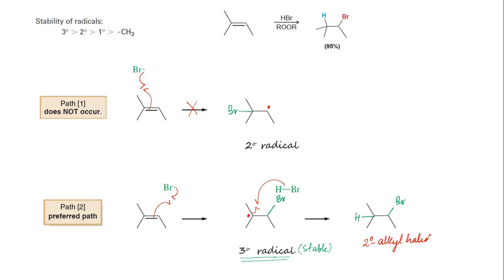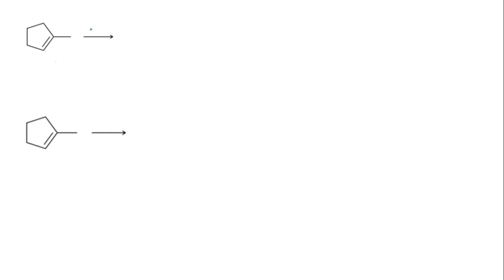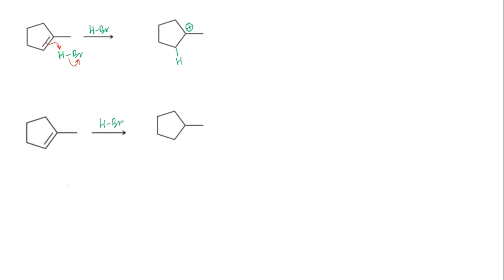One must understand that both mechanisms for the addition of HBr to an alkene, with and without peroxides, follow our extended statement of Markovnikov's rule. In both cases, the electrophile adds to the less substituted end of the double bond to give the more stable intermediate — either a carbocation in the absence of peroxide, or a free radical in the presence of peroxide.